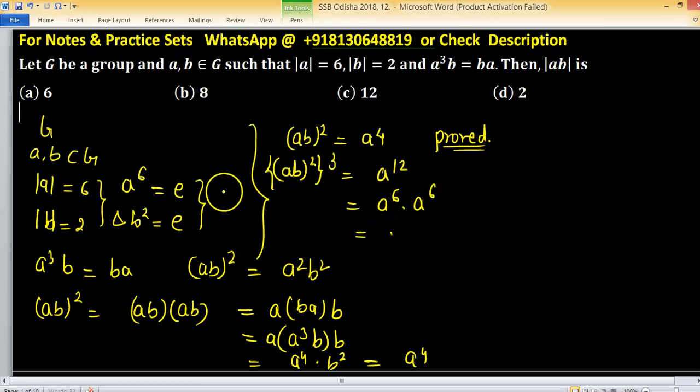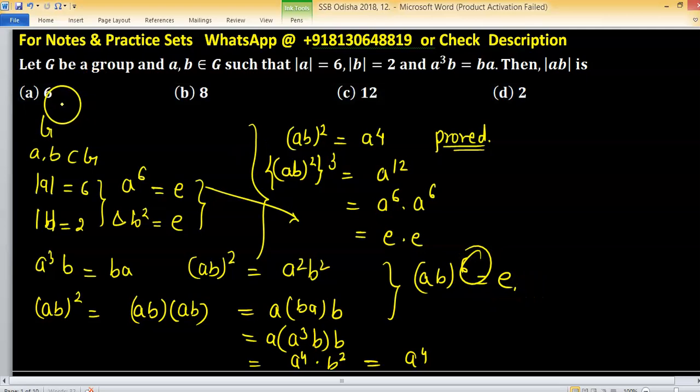So order of a is 6. From this concept we have identity. Means ab raised to the power 6 equals to identity. So 6 is the smallest positive number when we are getting identity. So option a will be right one.